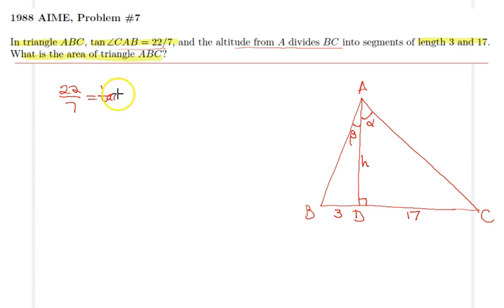Now I can use the addition formula for the tangent function. I get tangent alpha plus tangent beta all over 1 minus tangent alpha tangent beta.